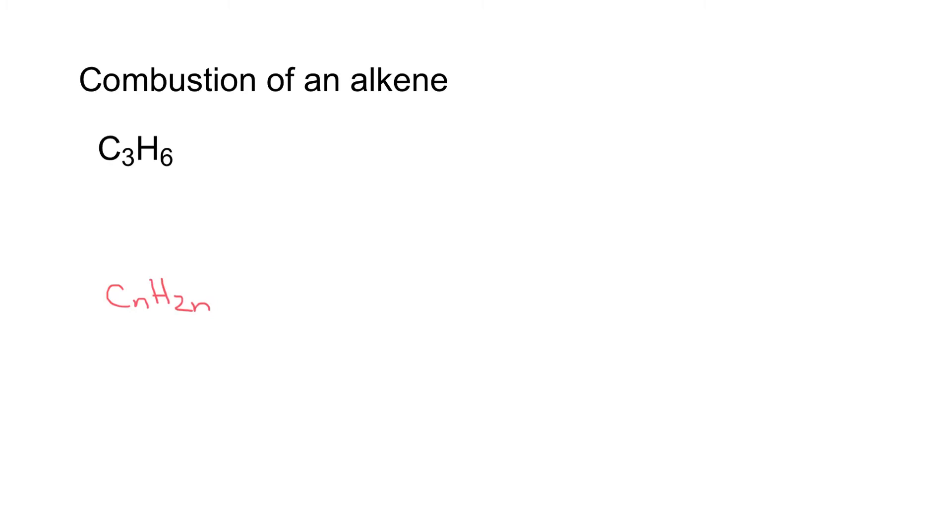For complete combustion of an alkene, you take the number of carbons—three in this case—and H2n, which means twice as many hydrogens as carbons. First step: you need the magic ingredient, oxygen. Then your reaction produces CO2 gas plus H2O. Let's keep this simple for now.